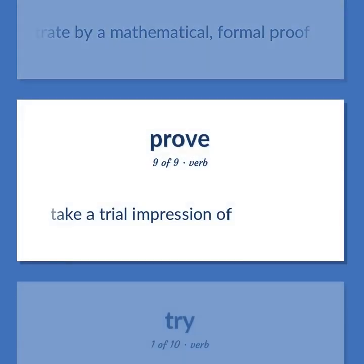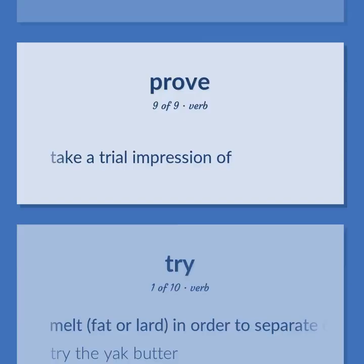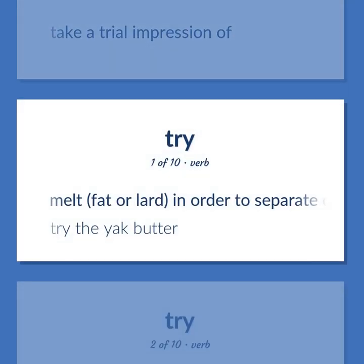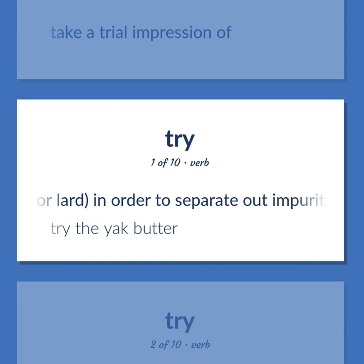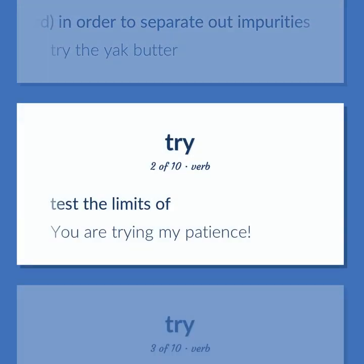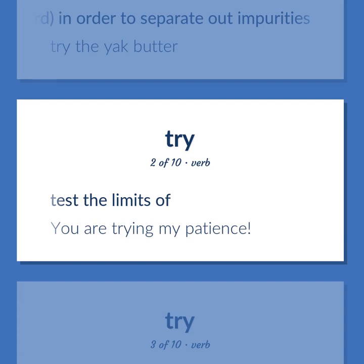PROVE: Take a trial impression of. Melt fat or lard in order to separate out impurities — try the yak butter. Test the limits of — you are trying my patience.